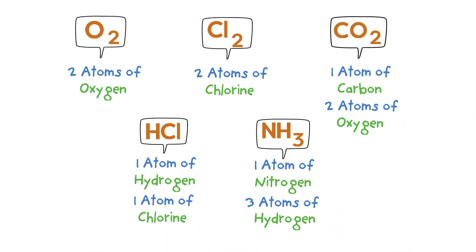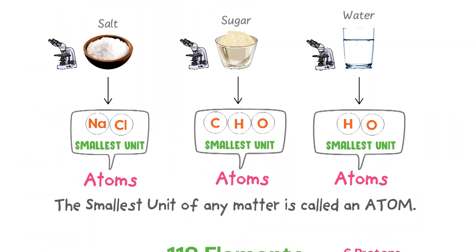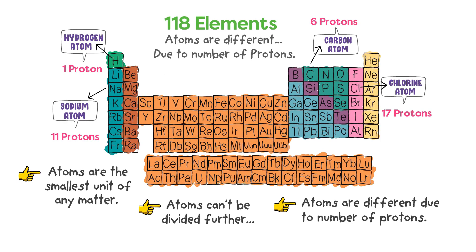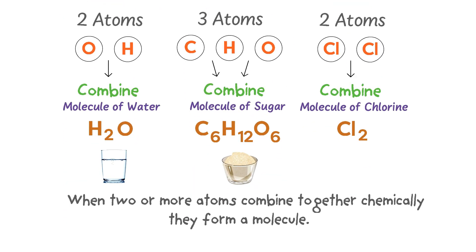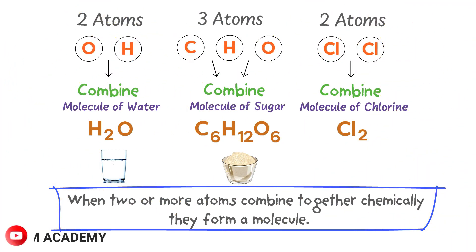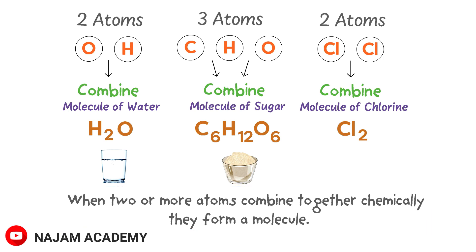To summarize: an atom is the smallest unit of any matter, and atoms are different from one another due to proton numbers. When two or more atoms combine together chemically, they form a molecule. If you learned something new in this video, please like and subscribe to our channel for more conceptual lectures. Thank you very much for watching.